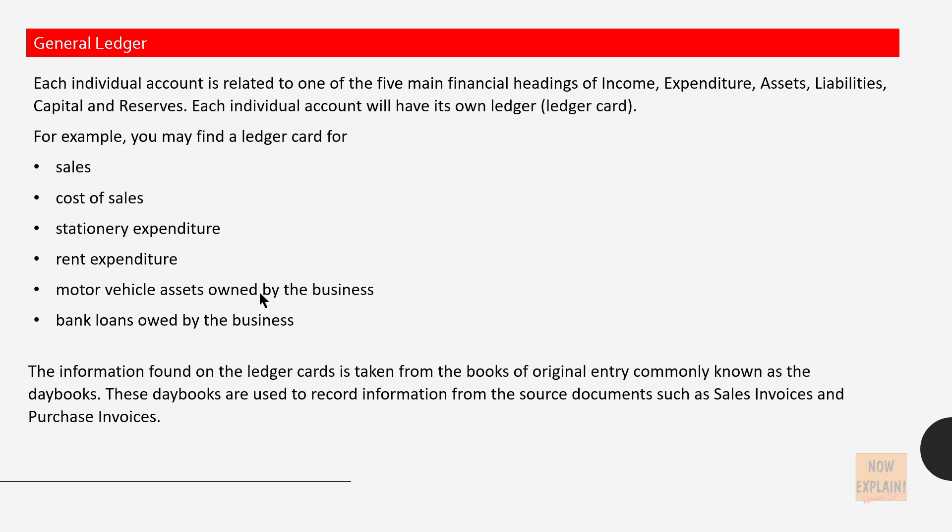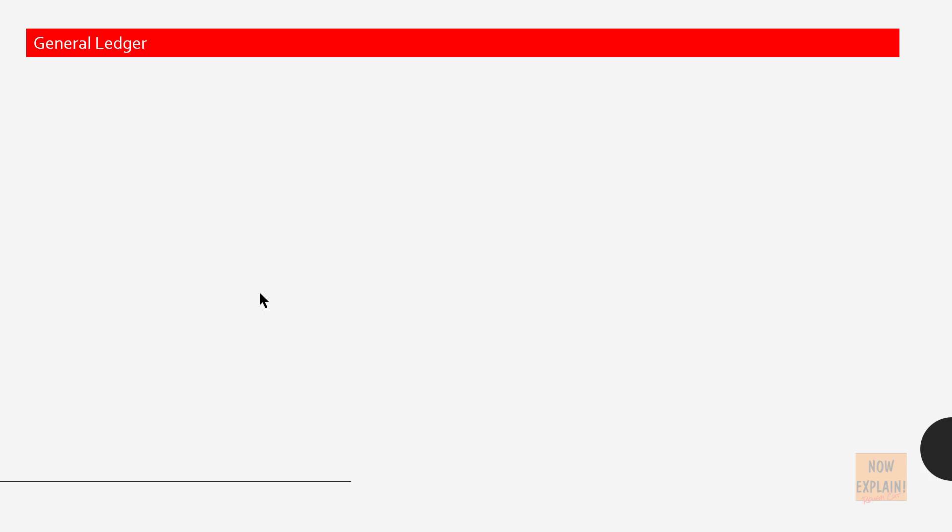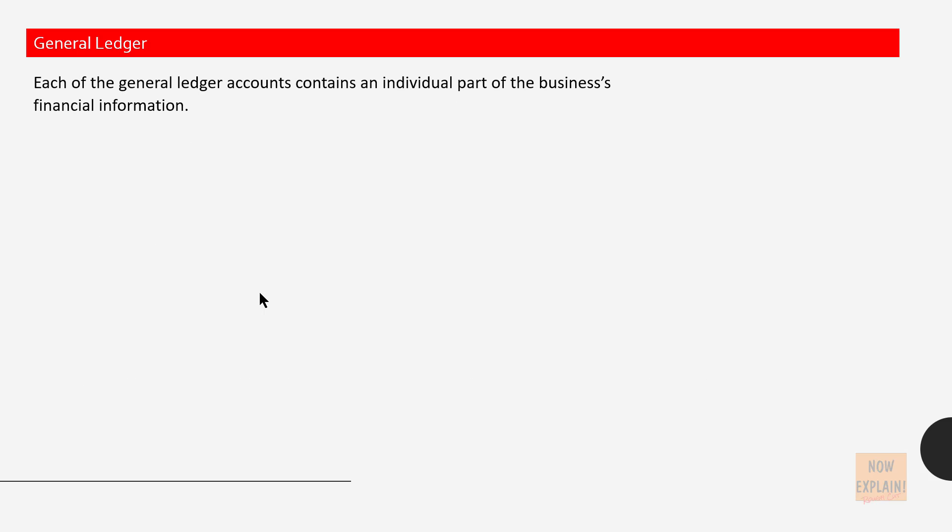These daybooks are used to record information from the source documents such as sales invoices and purchase invoices. Each of the general ledger accounts contains an individual part of the business's financial information.